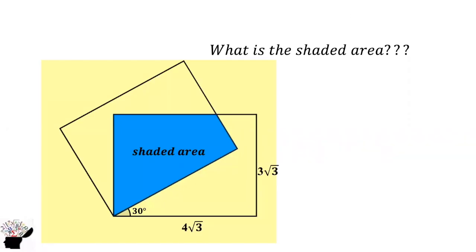Welcome to my YouTube channel. We have two identical quadrilaterals and we are supposed to find the shaded area. We are given the length as 4√3 and the breadth as 3√3.